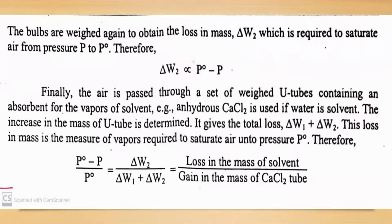The bulbs are weighed again to obtain the loss in mass W2, which is required to saturate air from pressure P to P°. Therefore delta W2 is proportional to P° minus P.